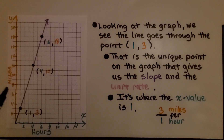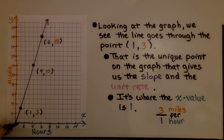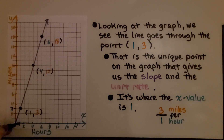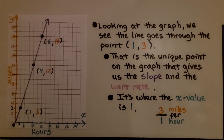Looking at the graph for that problem, we see the line goes through the point (1, 3). If this is 2 and that's 0, then this is 1 right here, and if this is 2 and that's 4, then this is 3. That means our point goes through x = 1 and y = 3. That is the unique point on the graph that gives us the slope and the unit rate — it's where the x-value is 1. We know he walked 3 miles per 1 hour.